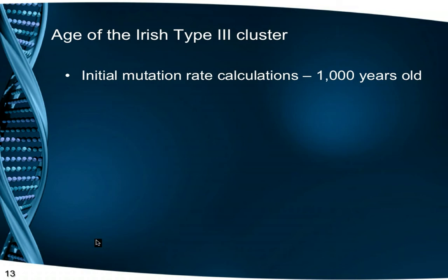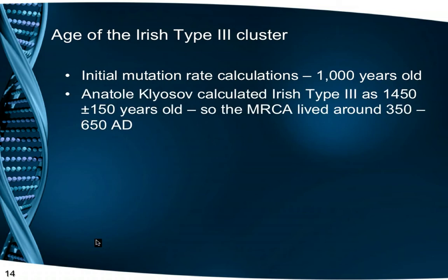In mid-2008, calculations to determine the age of the cluster were made, which indicated this group was around 1,000 years old, which lined up pretty well with the Irish pedigrees. A further calculation using Anatole Klyosov's methods in late 2014 on 336 haplotypes of 67 markers gave a more precise age of 1,450 plus or minus about 150 years. That is, the most common ancestor of the Dalcassian, who was L226, lived somewhere between 350 and 650 AD.